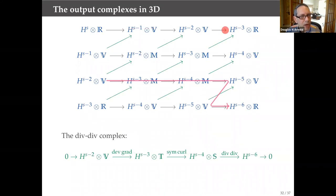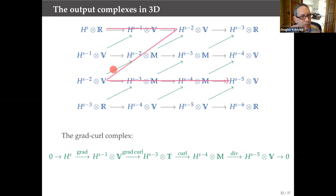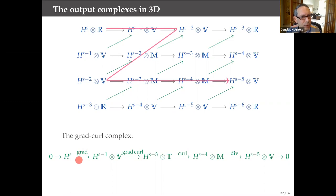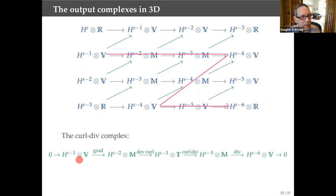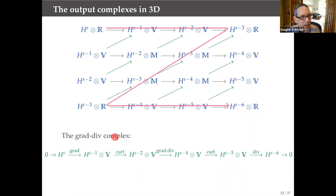I'm not done. I can take non-adjacent rows as well. Taking the first and third rows gives the grad-curl complex. Taking the second and fourth rows gives the curl-div complex. Taking the first and last rows gives the grad-div complex. And we can keep going: new complexes can serve as inputs to this construction. For example, taking the elasticity complex and the Hessian complex as inputs gives a new complex called the conformal elasticity complex.